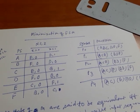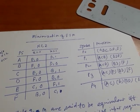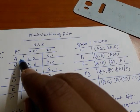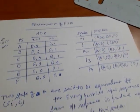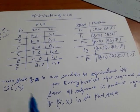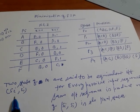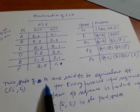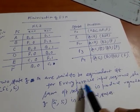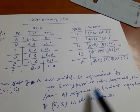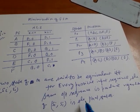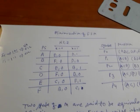In this video we are going to learn the minimization of finite state machine. Before the minimization we have to know whether the states are equivalent or not. Here you can see the definition: two states si or sj of machine M are said to be equivalent if and only if for every possible input sequence the same output sequence is produced, regardless of whether si or sj is the initial state.